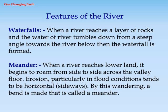Meander: When a river reaches lower land, it begins to roam from side to side across the valley floor. Erosion, particularly in flood conditions, tends to be horizontal and sideways. By this wandering, a bend is made that is called a meander.